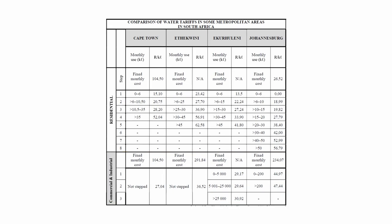Water tariffs are usually calculated on a sliding scale. This means if you use 45 kilolitres of water, you will have to calculate the water usage for each step up to step four, which is the step for water consumption above 35 kilolitres. The total cost will be the sum of all four steps plus any fixed monthly cost. A fixed monthly cost is the cost that must be paid even if you don't use any water that month.